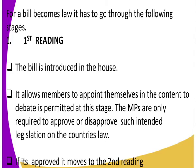To summarize the first reading: that is when the bill is being tabled. The members of parliament are allowed to debate, and they either approve or disapprove. If the bill is approved, it moves to the second reading.